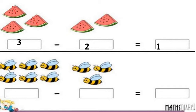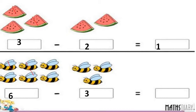How many honeybees are there? There are 6 honeybees. Out of that, we have to cut 3 honeybees. We cross out 3 honeybees out of this group of 6. How many remaining honeybees are there? 1, 2, and 3. So we write 3 in the given box. This is the difference between these 2 groups.